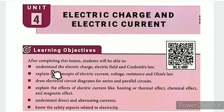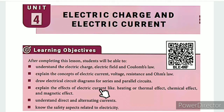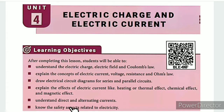In this lesson, the learning objectives are: understand electric charge, electric field, and Coulomb's law; explain the concepts of electric current, voltage, resistance, and Ohm's law; draw electrical circuit diagrams for series and parallel circuits; explain the effects of electric current like heating or thermal effect, chemical effect, and magnetic effect; understand direct and alternating currents; and know the safety aspects related to electricity.